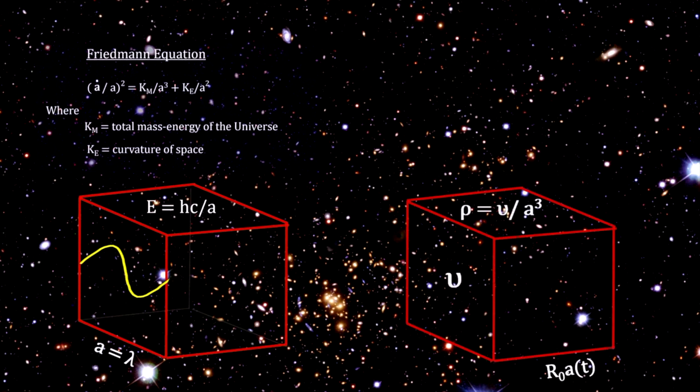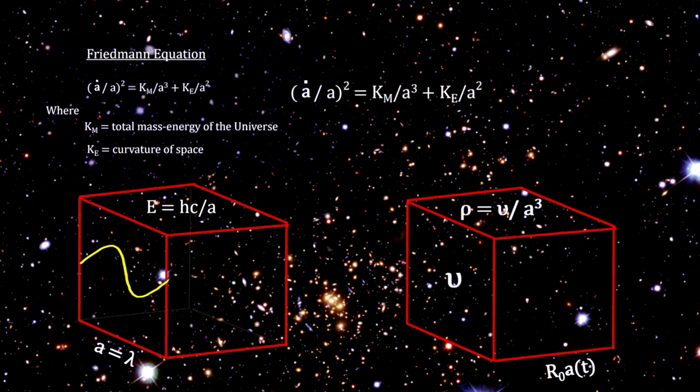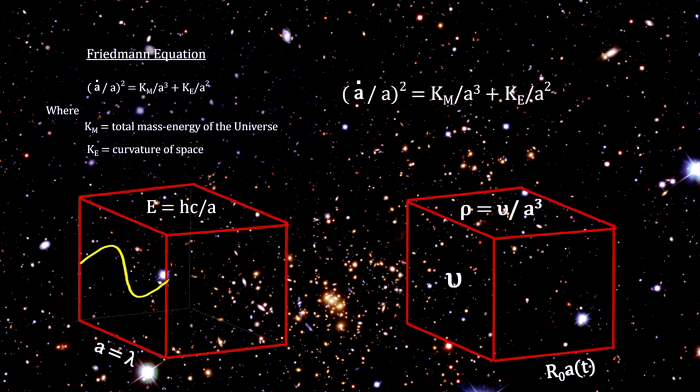In fact, we see that the scale factor, A, is the only variable. In other words, the history of the universe comes down to the history of the scale factor. And the history of the scale factor depends completely on the contents of the universe, and how that content affects the space it exists in.